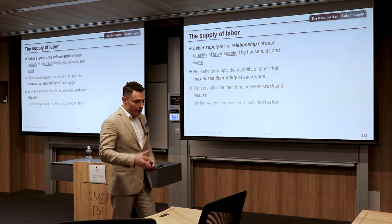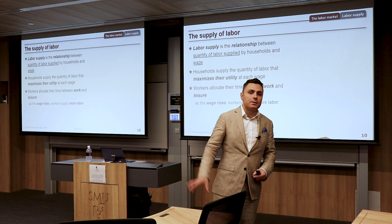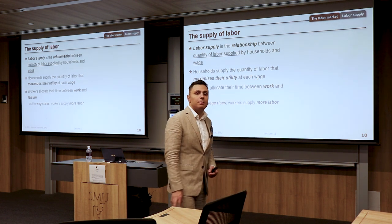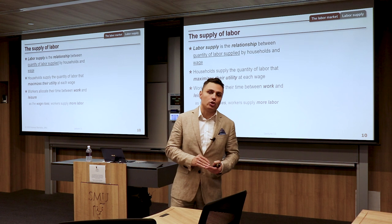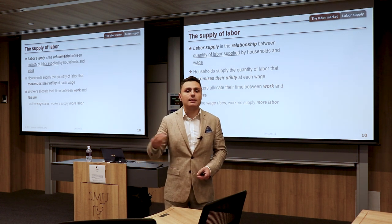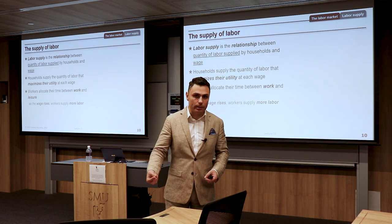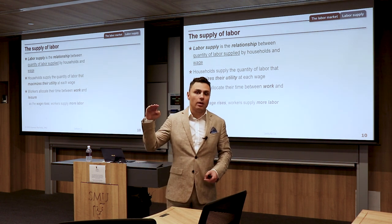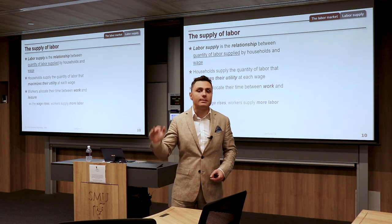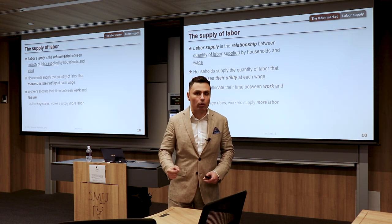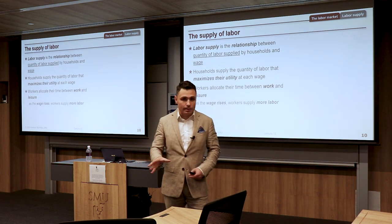Households must balance utility from leisure and utility from income to find the optimal allocation of work hours. In general at the macroeconomic level, as the wage rises, workers are expected to supply more and more labor. However, some supply curves for labor show a backward-bending shape for very high wages.